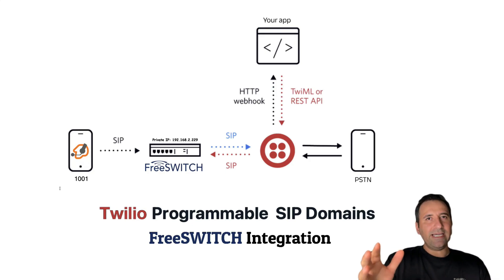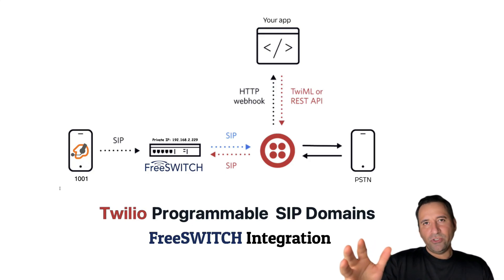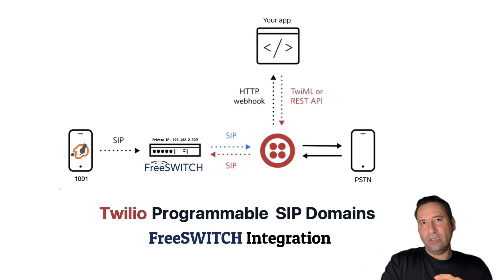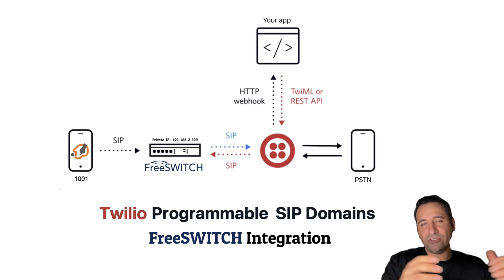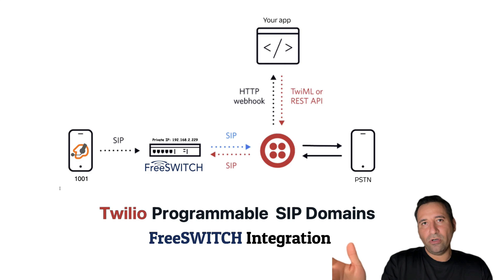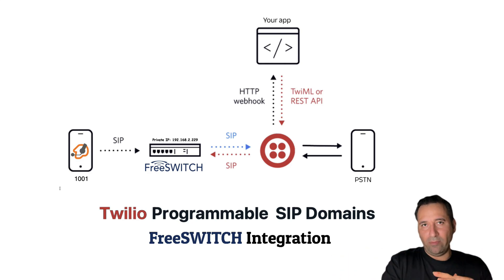In the previous video, I explained how to use Twilio elastic SIP trunking in your FreeSwitch setup to route Twilio numbers to your FreeSwitch, or make calls from your FreeSwitch number to your landline or mobile number.